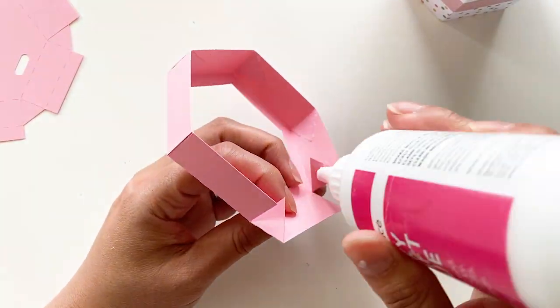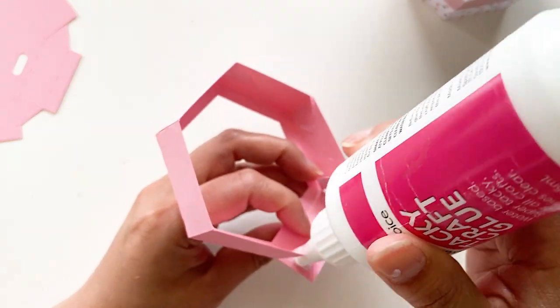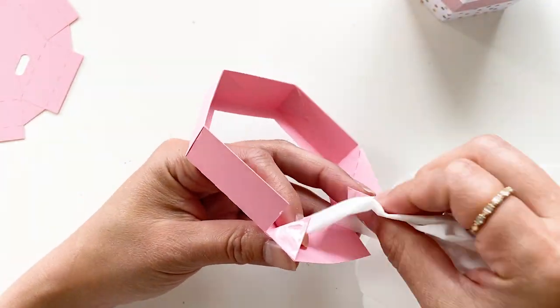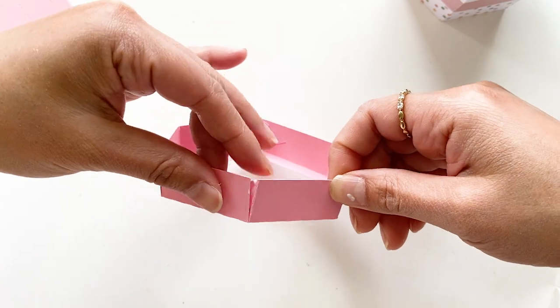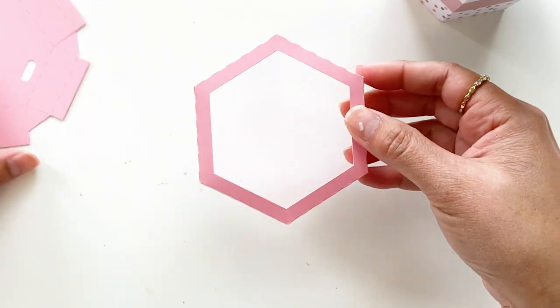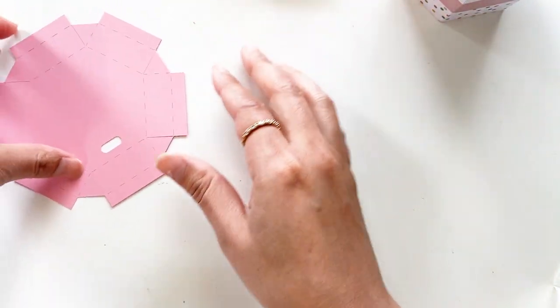Glue the last two tabs at the same time. Too much glue here. Just gonna wipe it. Hold the last two tabs and press. The first part of the lid is done.